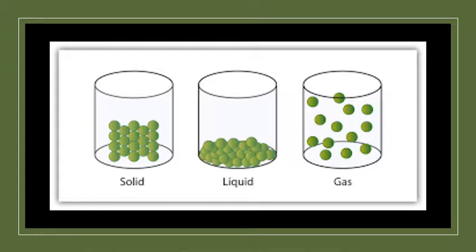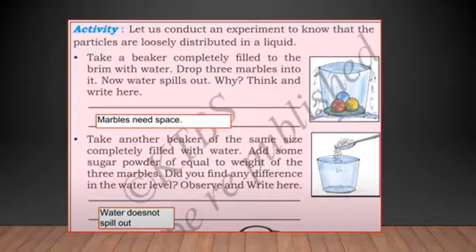Here you can see the particles or molecules of solid, liquid, and gas together in one picture. Solid means they are very closely packed, tightly packed. Liquid is little loosely packed. Gas is not arranged at all. The molecules or particles are not arranged at all.